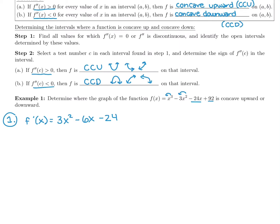We are working with the second derivative, so we don't need to factor the first derivative at all. Taking the second derivative: derivative of 3x² is 6x, derivative of -6x is -6, and the derivative of -24 is 0 since it's a constant. So f''(x) = 6x - 6. Setting it equal to zero: 6x - 6 = 0, so 6x = 6, which gives x = 1.